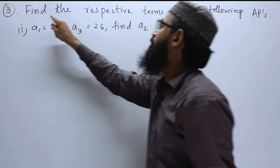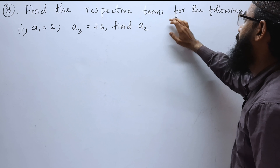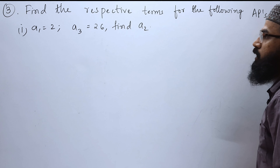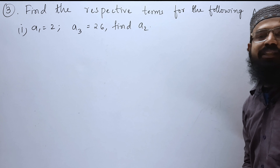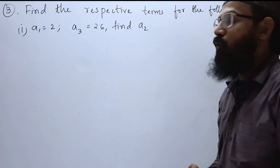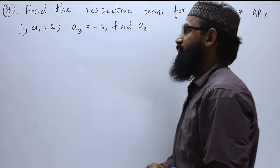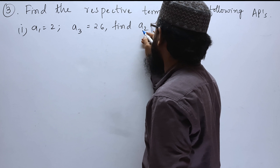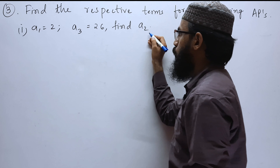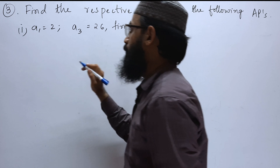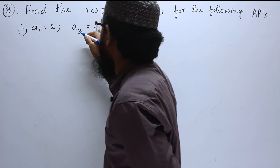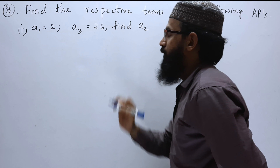Third problem: find the respective terms for the following APs. They have given some arithmetic progressions and we have to find some terms. A1 and A3 are given.